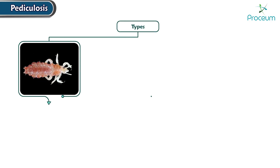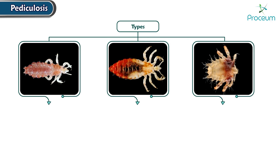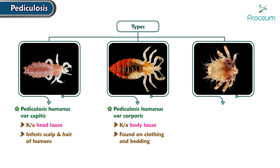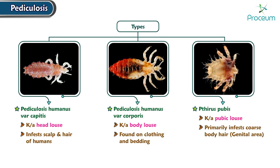There are several types of pediculosis, each associated with specific types of lice. Pediculosis humanus var capitis, commonly known as the head louse, infests the scalp and hair of humans. Pediculosis humanus var corporis, referred to as the body louse, is found on clothing and bedding. Phthirus pubis, known as the pubic louse, primarily infests coarse body hair such as in the genital area.